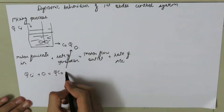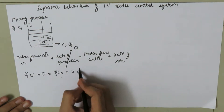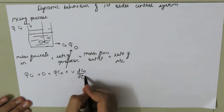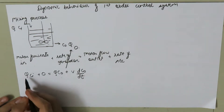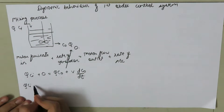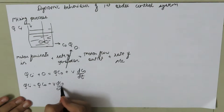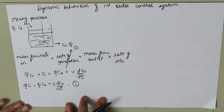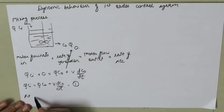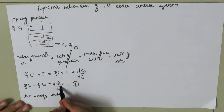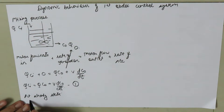So the equation becomes Q times CI equals Q times CO plus V times d(CO)/dt. This is equation number one. At steady state, the change in outlet concentration with respect to time is zero, so equation one reduces to Q times CI_s equals Q times CO_s. This is equation number two.